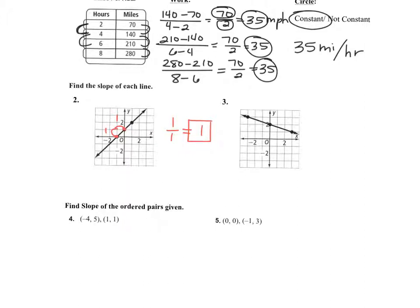Are you going up or down? You're going down, right? You always want to start at the left and go to the right. So you're going down one — that would be a negative one. And then you're going one, two, three to the right. So if you're going down one over three, your slope is negative one third.